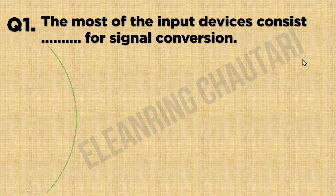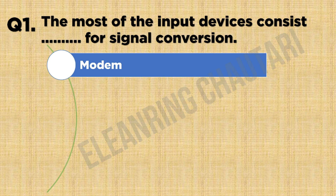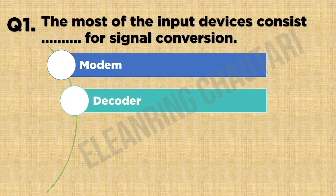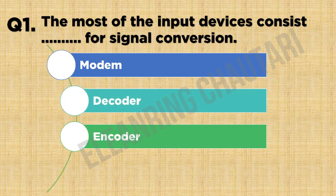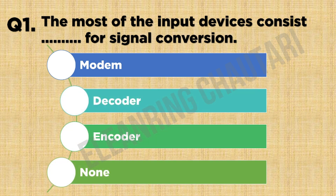Question 1. The most of the input devices consist for signal conversion. Option A: Decoder. Option B: Encoder.